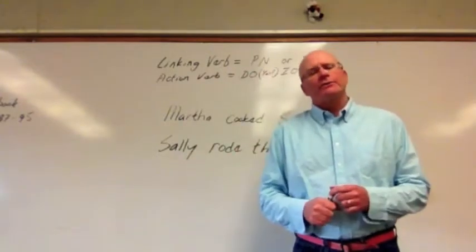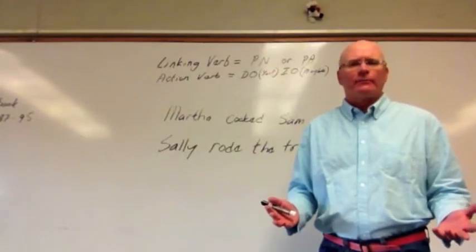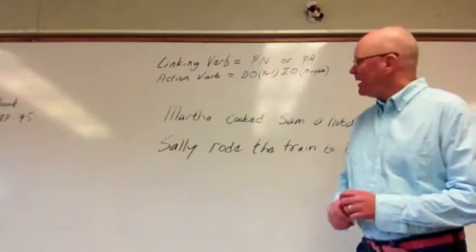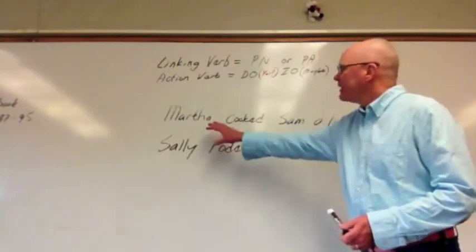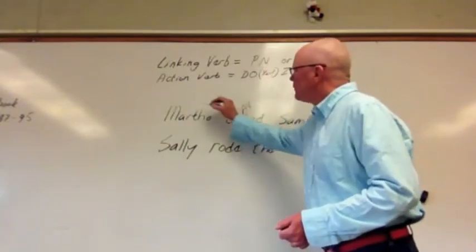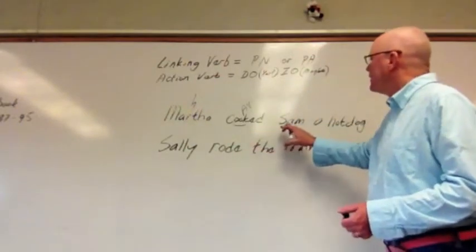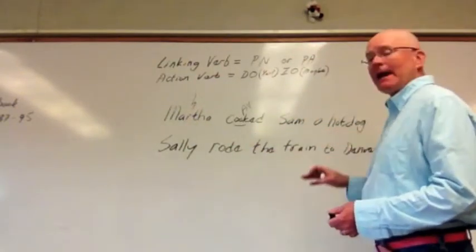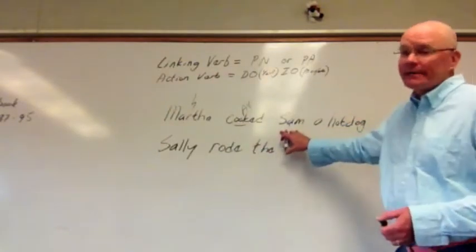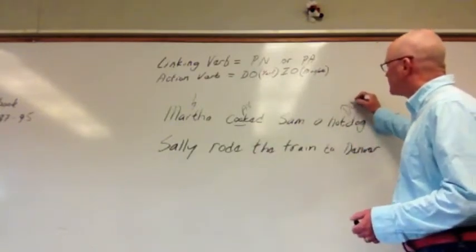Things do get a little tricky when you're talking about direct objects, because you'll often find more than one noun after the verb. You really have to ask yourself: which noun actually received the action of the verb? In the sentence Martha cooked Sam a hot dog, we've got the action verb cooked and the subject Martha to the left of the verb. Then we have Sam and a hot dog. You have to ask: what directly received the action of being cooked? Sam was not cooked by Martha — Martha cooked the hot dog. So the hot dog becomes your direct object.